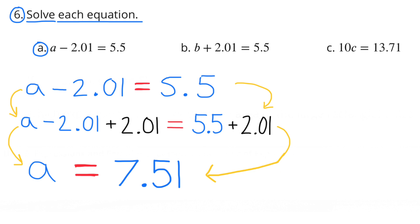Problem 6 — solve each equation. A: a minus 2 and 1 hundredth equals 5 and 5 tenths. To get a by itself, we add 2 and 1 hundredth to both sides. On the left, a minus 2 and 1 hundredth plus 2 and 1 hundredth equals a. On the right, 5 and 5 tenths plus 2 and 1 hundredth equals 7 and 51 hundredths. So a equals 7 and 51 hundredths.